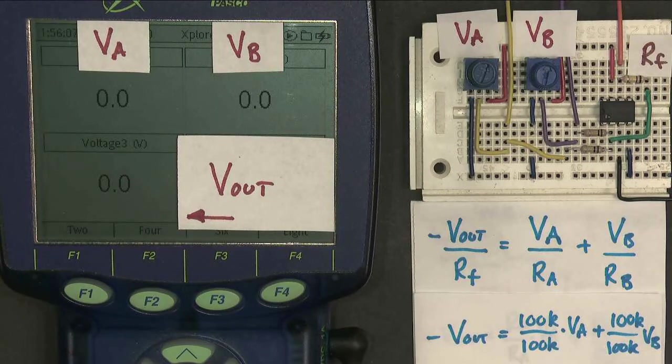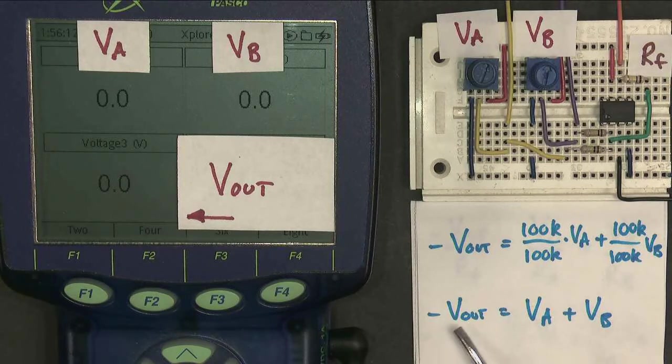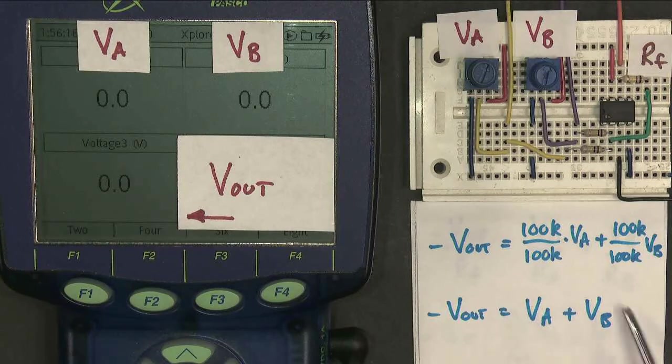And you think, oh my goodness, what a mess. But actually, all the 100Ks cancel out, and I should find out that minus Vout is just VA plus VB. This circuit should add the two voltages together. Give me the sum with a minus sign. Let's see if it does.